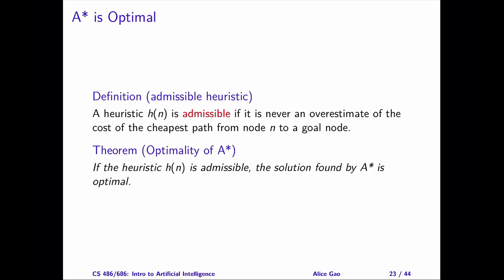The heuristic function is admissible if and only if, for any node n, h of n does not overestimate the cost of the cheapest path from the node n to a goal node. Suppose that we let h-star of n be the cost of the cheapest path from n to a goal node. Then, we must have that 0 is less than or equal to h of n, which is less than or equal to h-star of n.